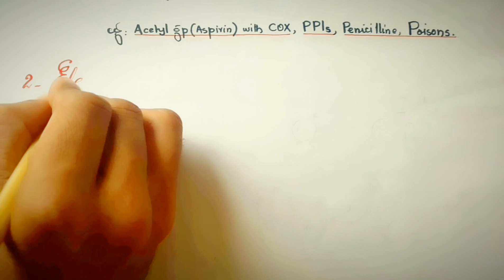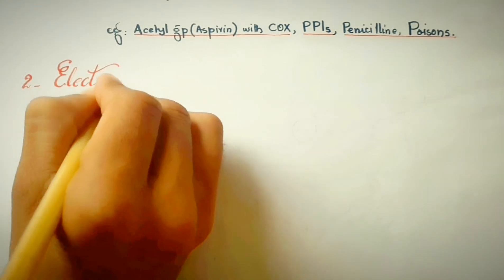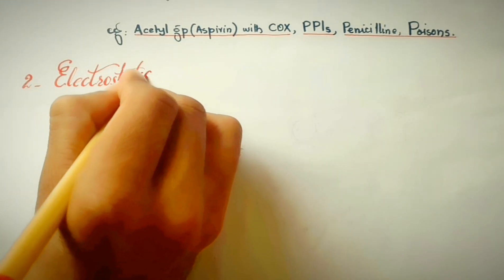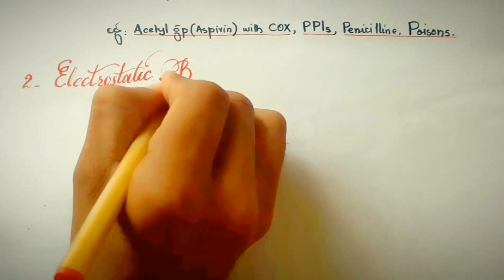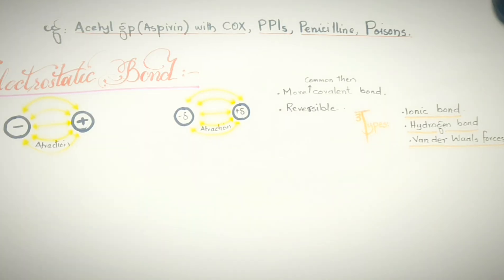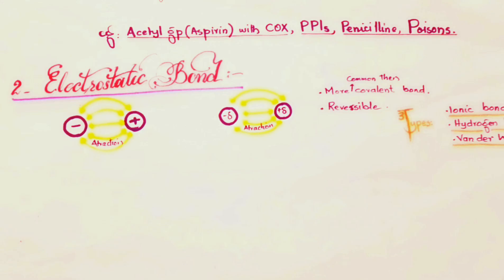The second type is electrostatic bonds. These types of bonds are formed due to the attraction between different charges. These types of bonds are weaker than covalent and mostly they are reversible, which are more common than covalent bonds. These types of bonds are mostly reversible in nature. Electrostatic bonds are subdivided into ionic bonds, hydrogen bonds, and van der Waals forces.